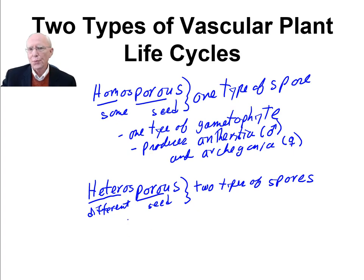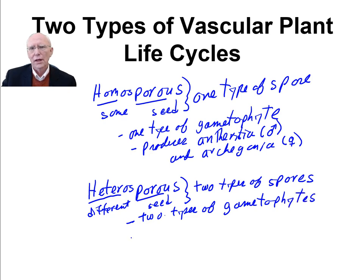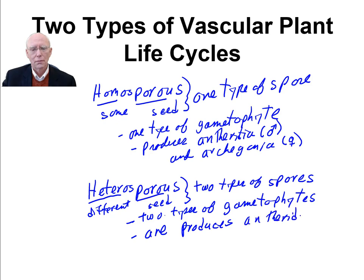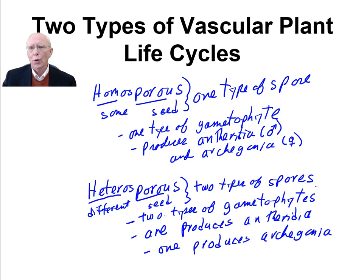Those spores each produce a gametophyte. Each of those gametophytes produces either the male sex organs or the female sex organs. So one of the gametophytes produces antheridia, and the other one produces archegonia. Our difference is whether there's one type of spore or two types of spores, and one type of gametophyte or two types of gametophytes.